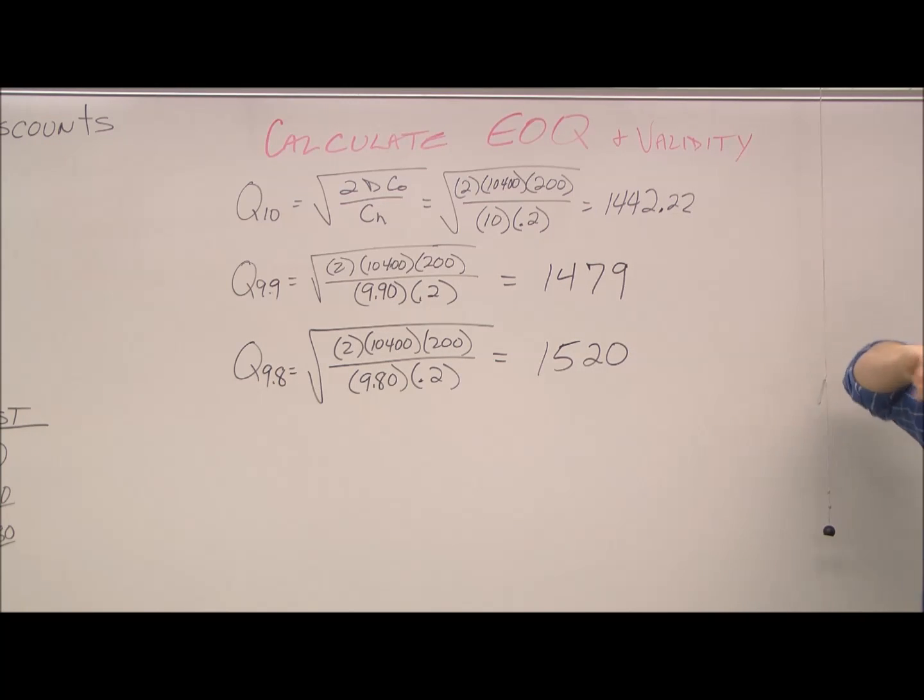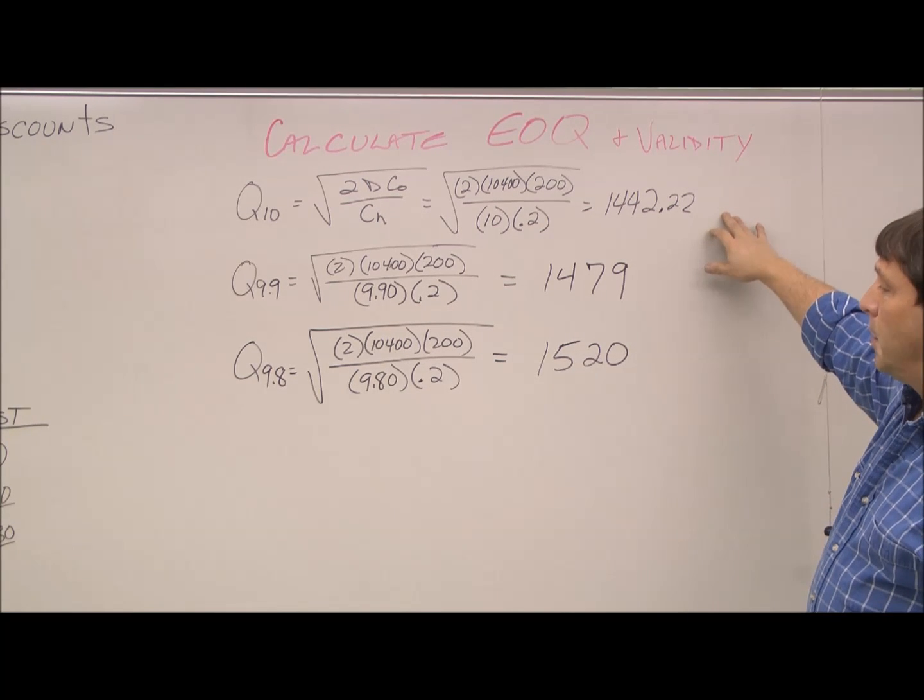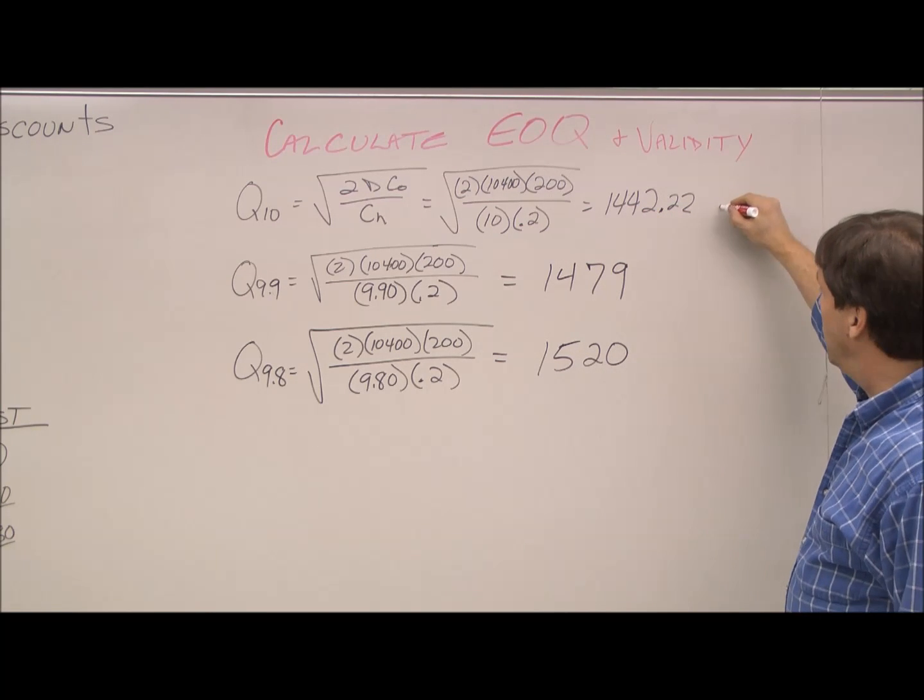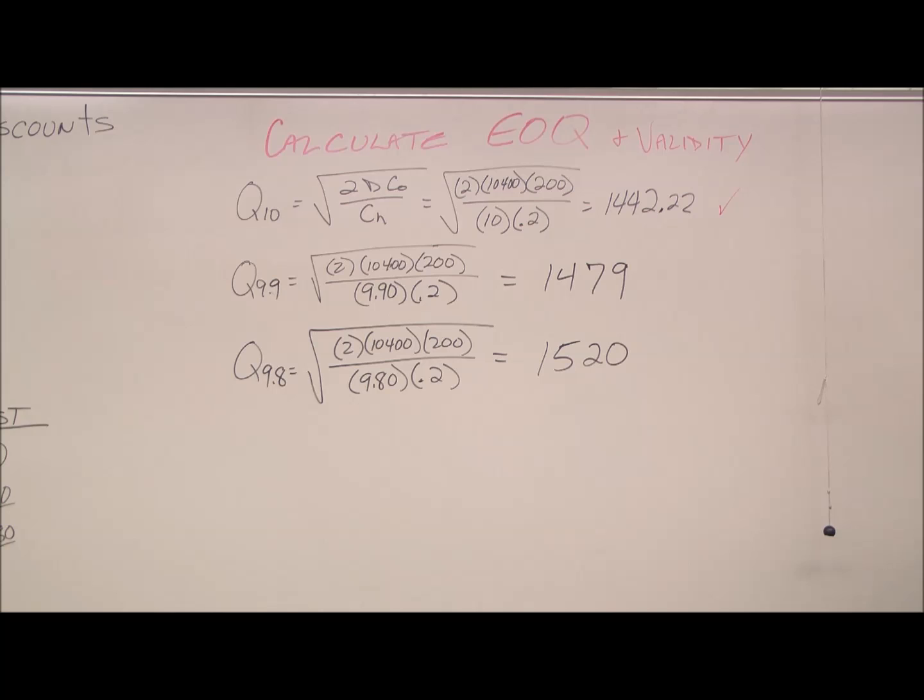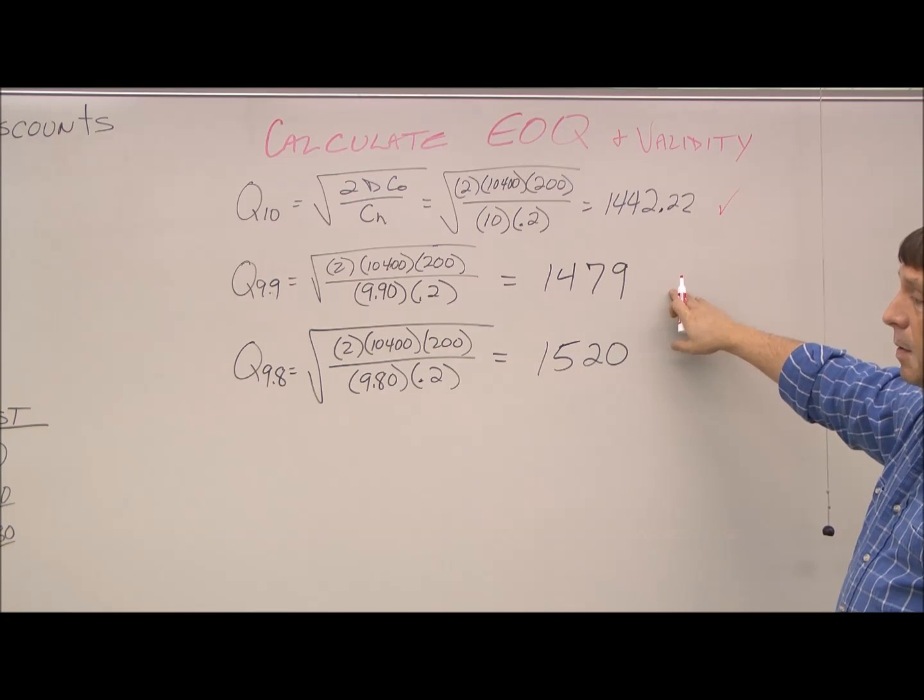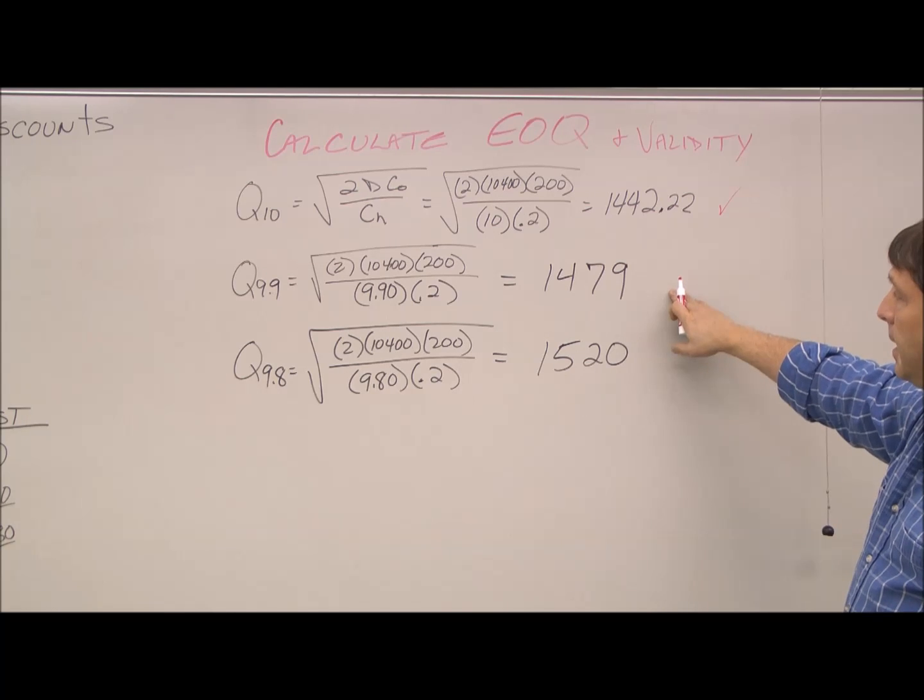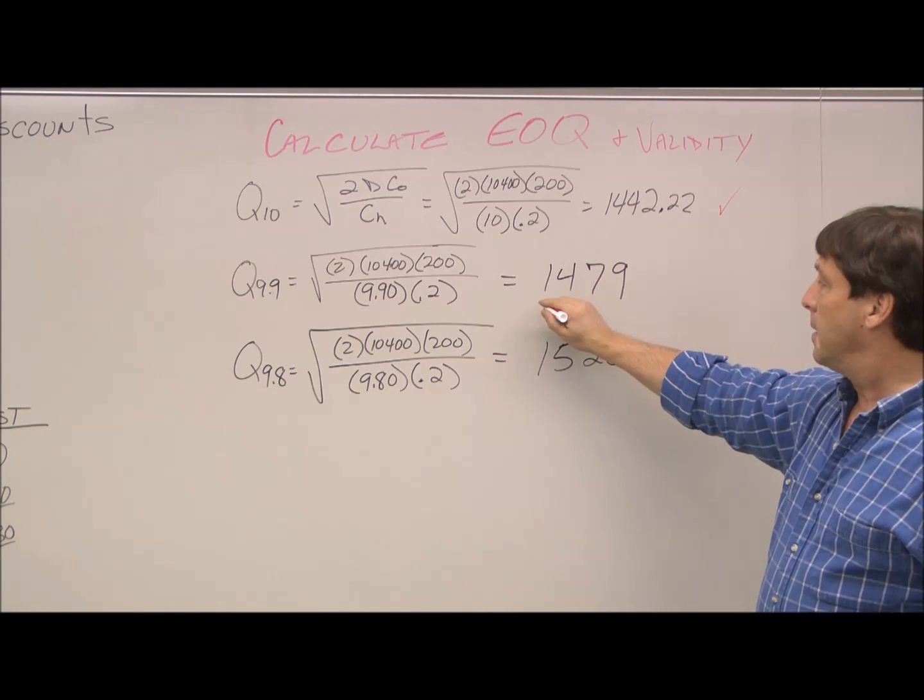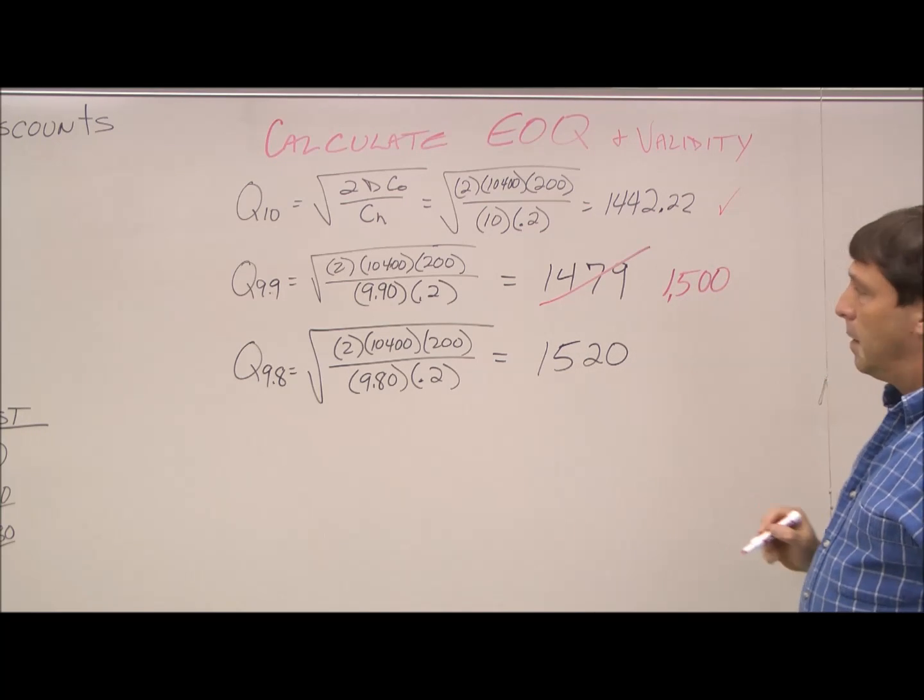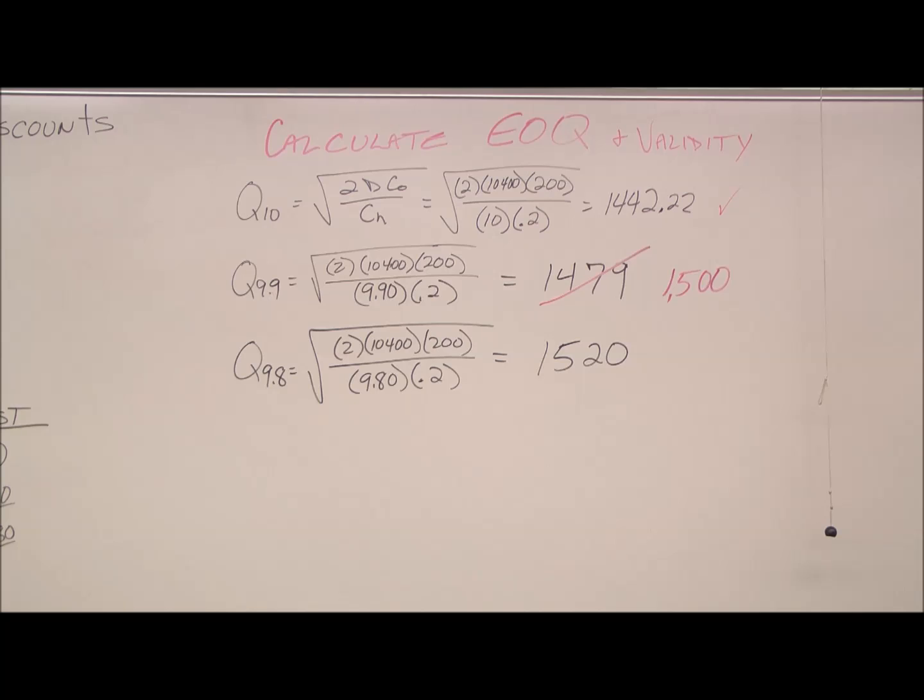The second thing we do is we check for validity. With our quantity discounts, the first quantity was from 0 to 1,499. This fits in that range, so that is valid. Our next quantity was 1,500 to 4,499. This is less, so this is not valid. So we have to change this Q to the minimum of that quantity discount range, which is 1,500.